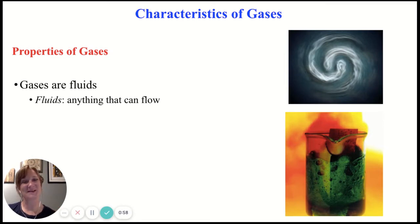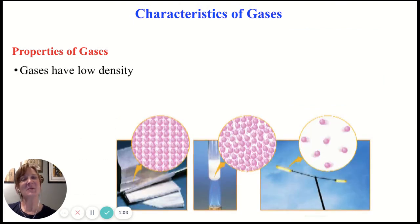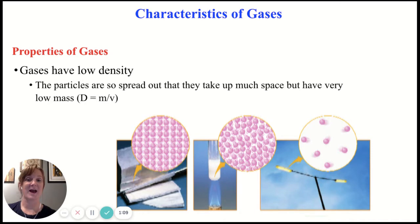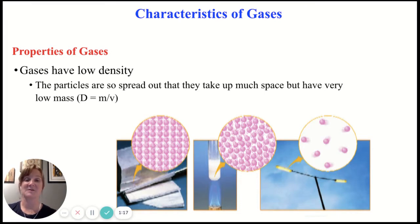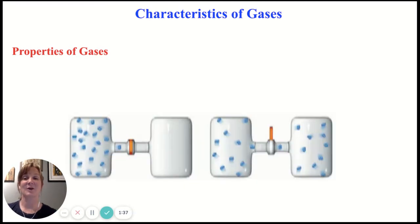Remember, gases are fluids just because they can flow. Liquids are also fluids because they can flow, but gases are not liquids. Another property of gases that we need to keep in mind is that they have a really low density. Our formula for density is mass over volume — a ratio between the mass of something and the volume. For gases, the particles are so spread out that they take up a whole lot of space but have a very small mass, meaning we're going to have a low density.